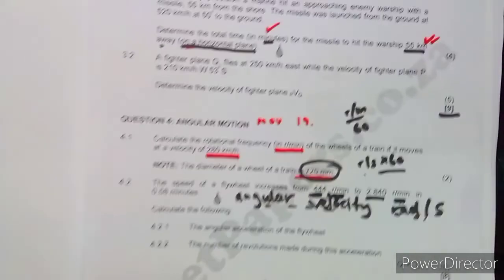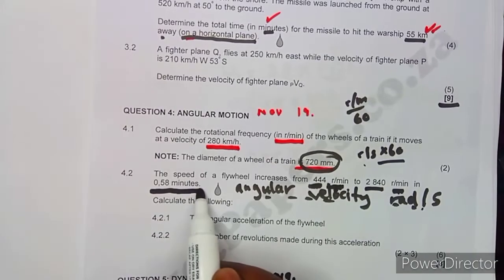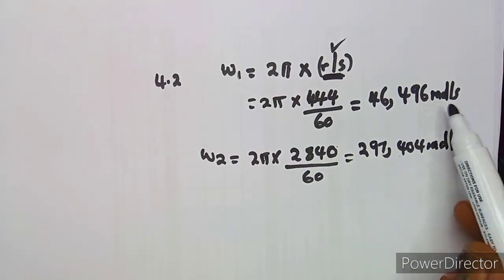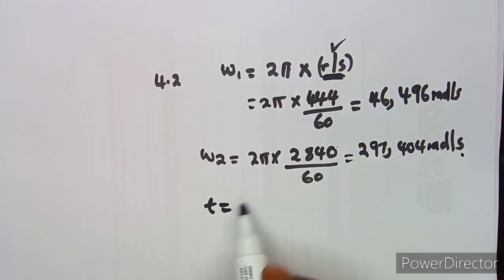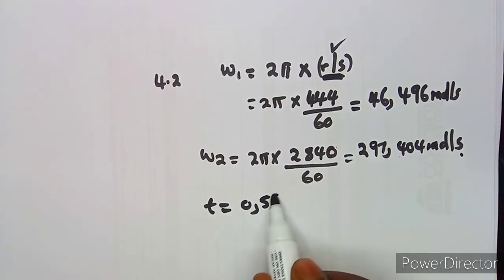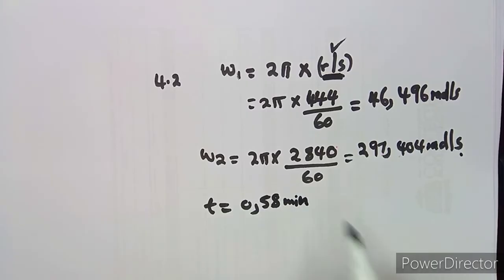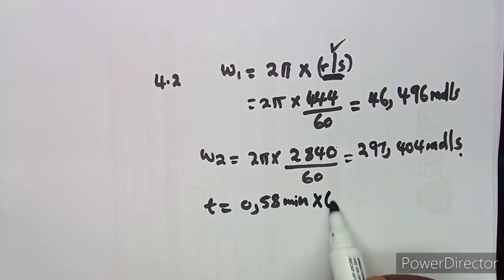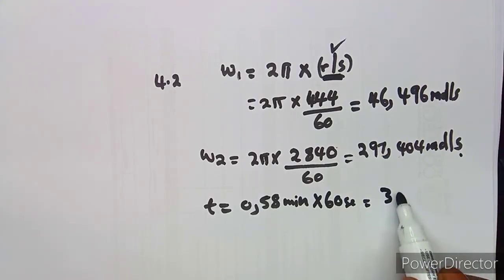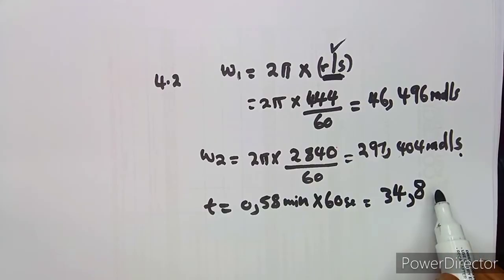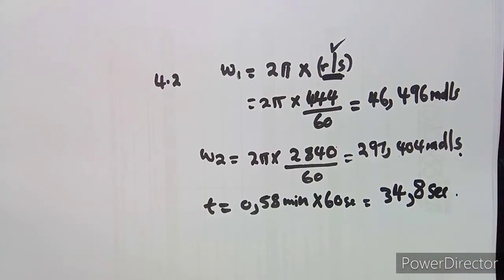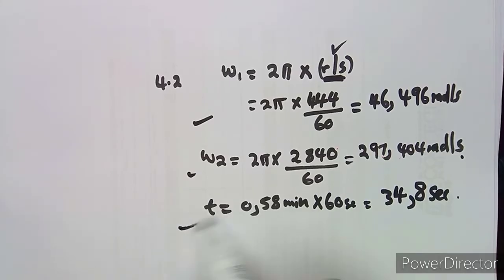The time is given in minutes, but since our angular velocities are in rad/s, the time must be in seconds. To convert 0.58 minutes to seconds, multiply by 60, giving us 34.8 seconds.